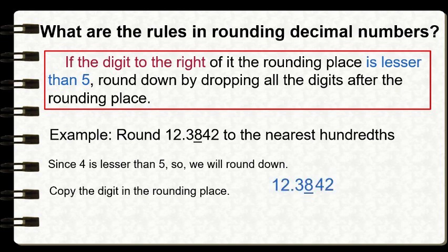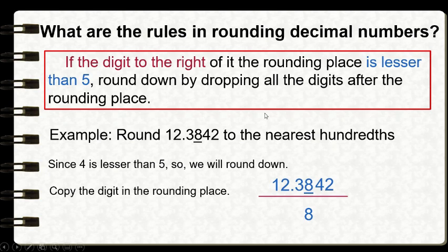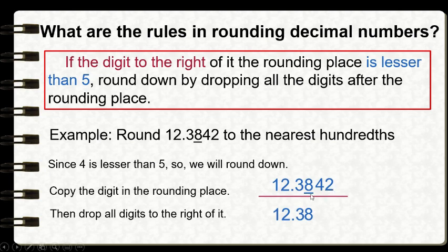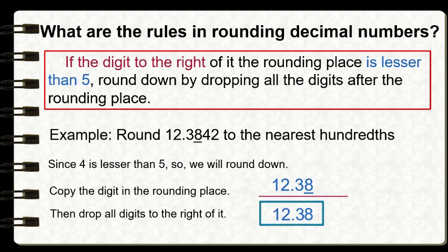Since four is less than five, we round down. We copy the digit in the rounding place, which is eight. We copy all digits to the left of our rounding place — twelve and three tenths — and drop all digits to the right, which is forty-two. Our answer is twelve and thirty-eight hundredths. Therefore, when we round twelve and three thousand eight hundred forty-two ten-thousandths to the nearest hundredths, we get twelve and thirty-eight hundredths.